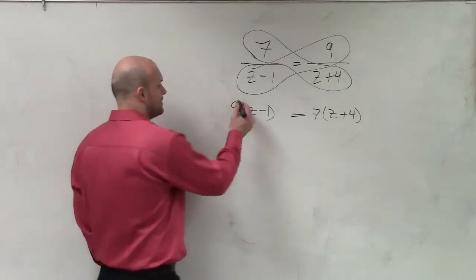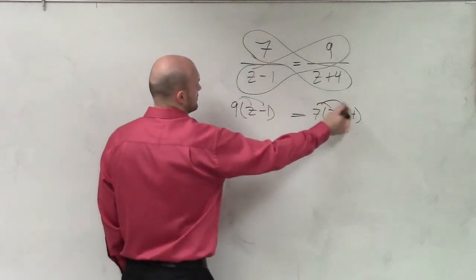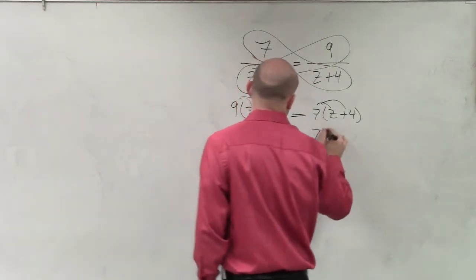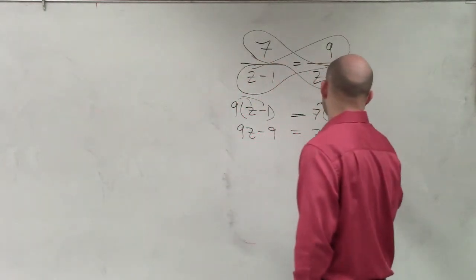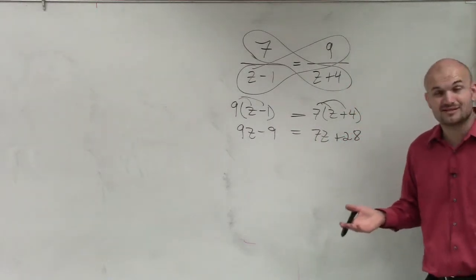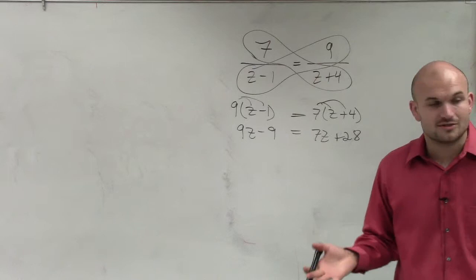So now, we can apply distributive property. So I have 9z minus 9 equals 7z plus 28. But now we have an issue, right? Because now we have a z on both sides. So to do this,